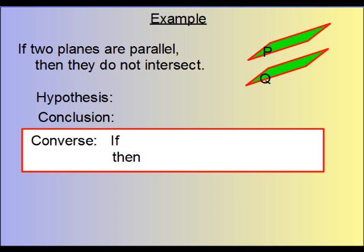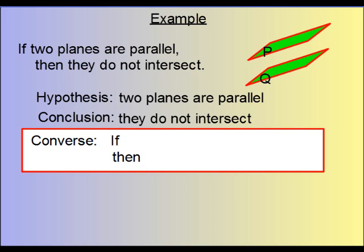Okay, let's do an example that's more geometrically focused. If two planes are parallel, then they do not intersect. This is our given conditional statement. So, based on that, what is the hypothesis, and what is the conclusion? Well, the hypothetical is that the two planes are parallel, as I have them here drawn for you. And the conclusion would be that they do not intersect.